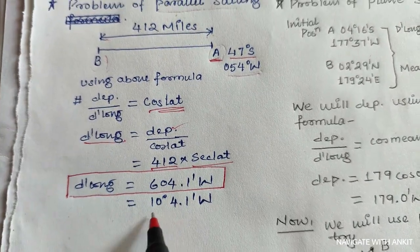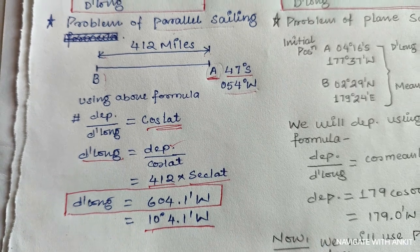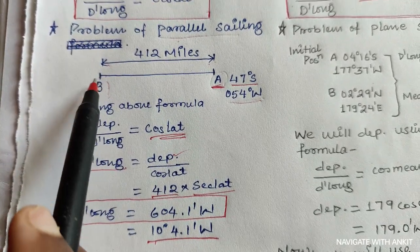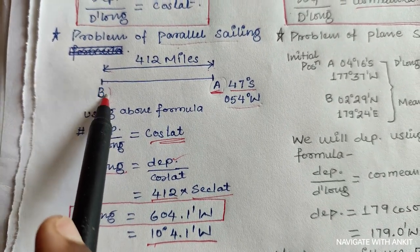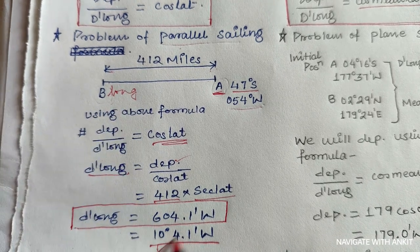And this is the D'long, and I know that you can find the longitude of position B after getting D'long. So I am not going to solve further, and the latitude of B is same as the latitude of A.